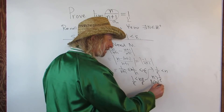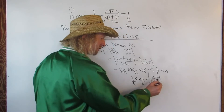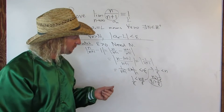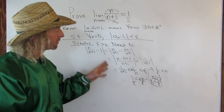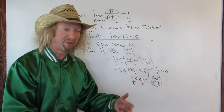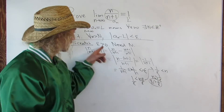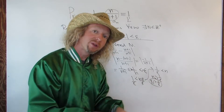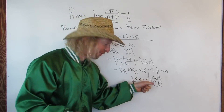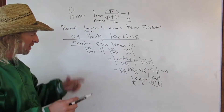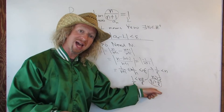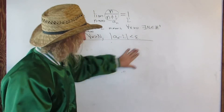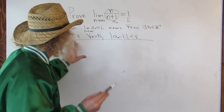We can find an N that's bigger than 1 over epsilon. There's a property in mathematics called the Archimedean principle — it says given any real number, you can find a positive integer which is bigger. Since 1 over epsilon is a real number (epsilon is positive, so it's not zero), by the Archimedean principle we can find a positive integer N that is bigger. That's going to be our N in the proof.